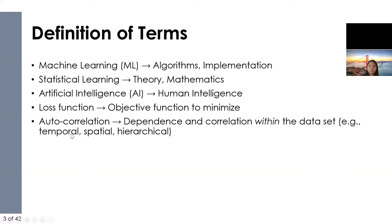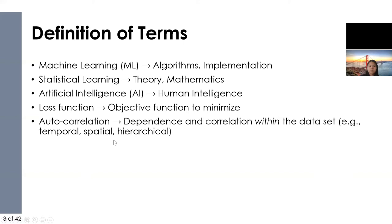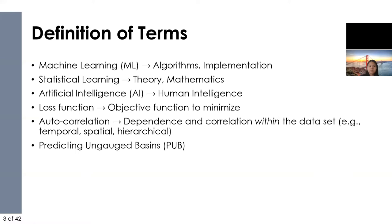I'm going to be talking about autocorrelation — these are dependencies and correlation that exist within a dataset itself — and we'll describe temporal, spatial, and hierarchical autocorrelation. Lastly, I'll be using the acronym PUB: predicting ungaged basins. It's become a very familiar term because the International Association of Hydrological Sciences dubbed predicting ungaged basins a grand challenge for the 2003 to 2012 decade.